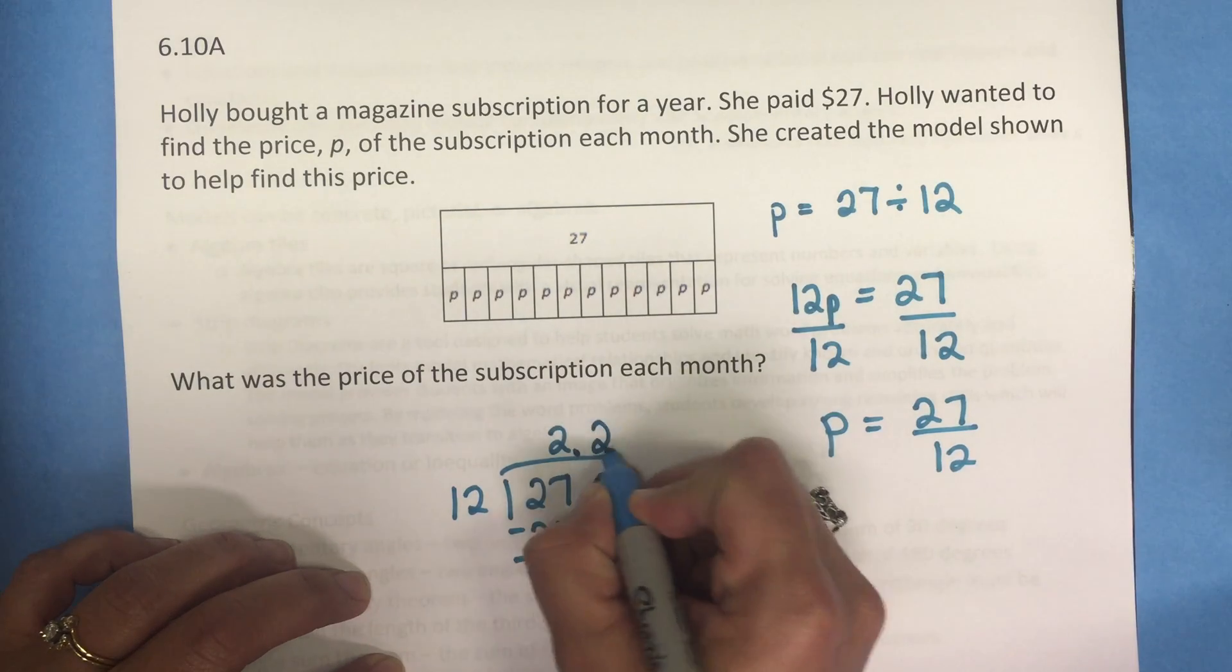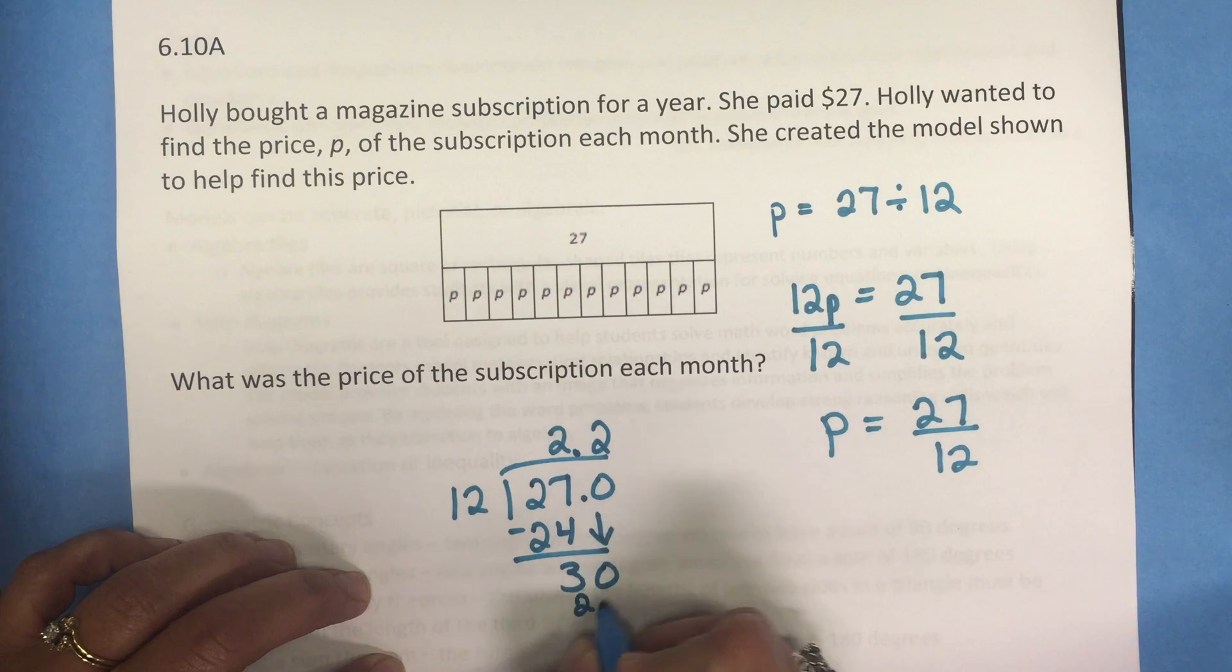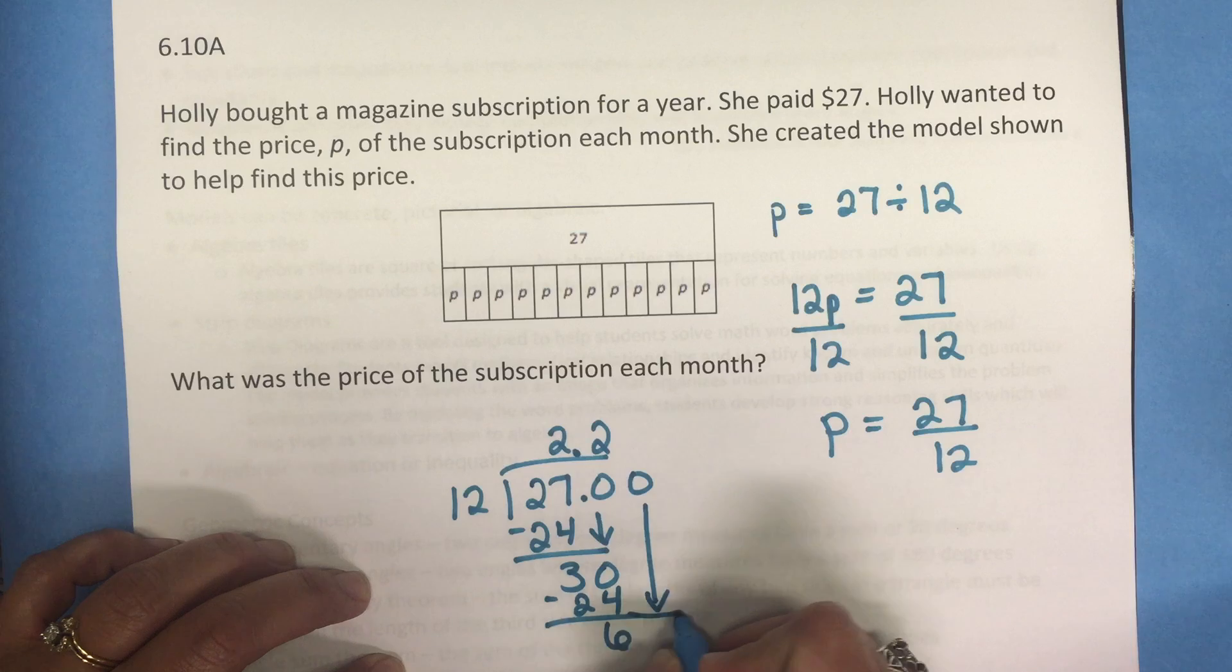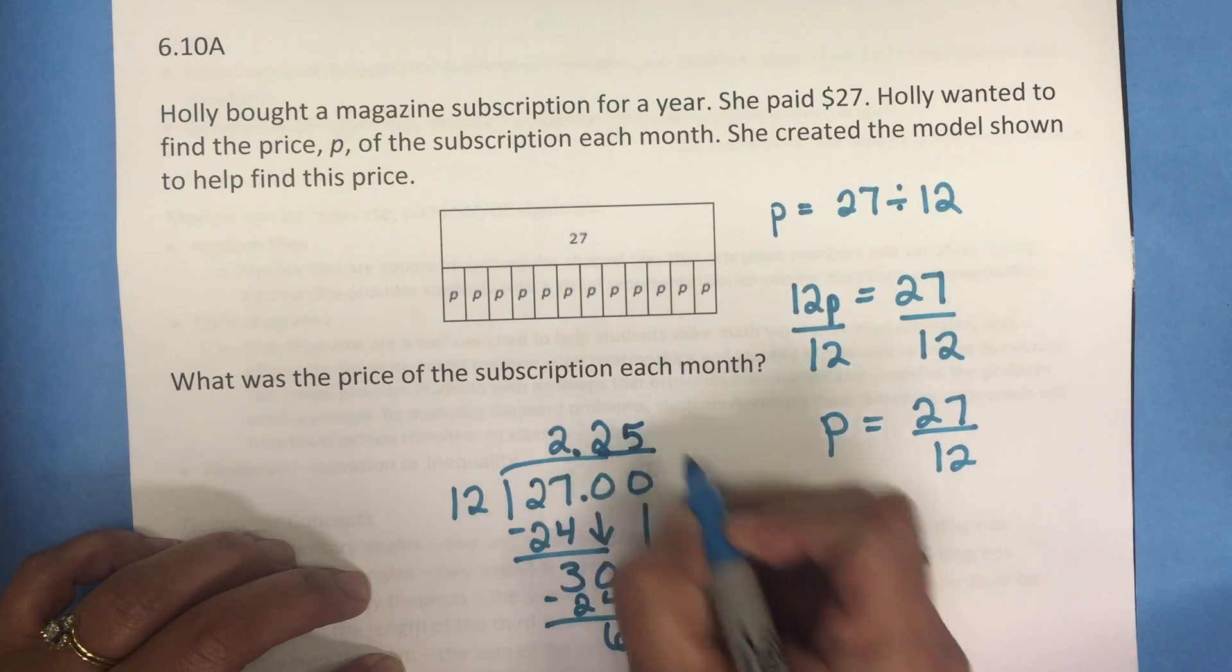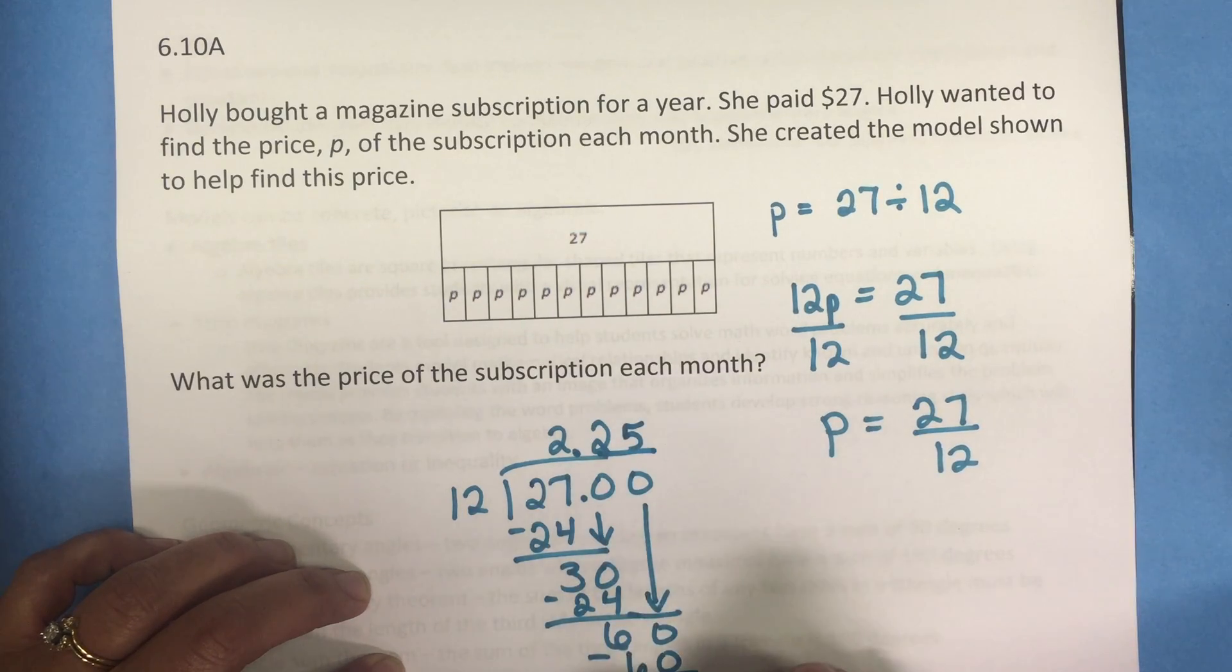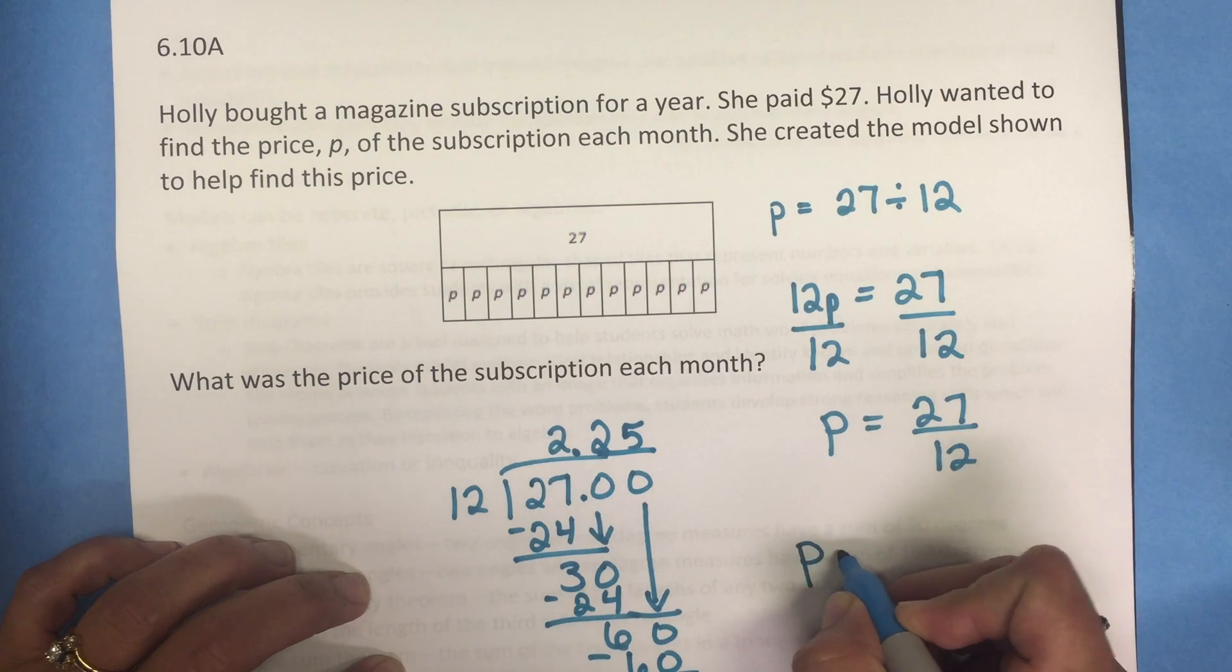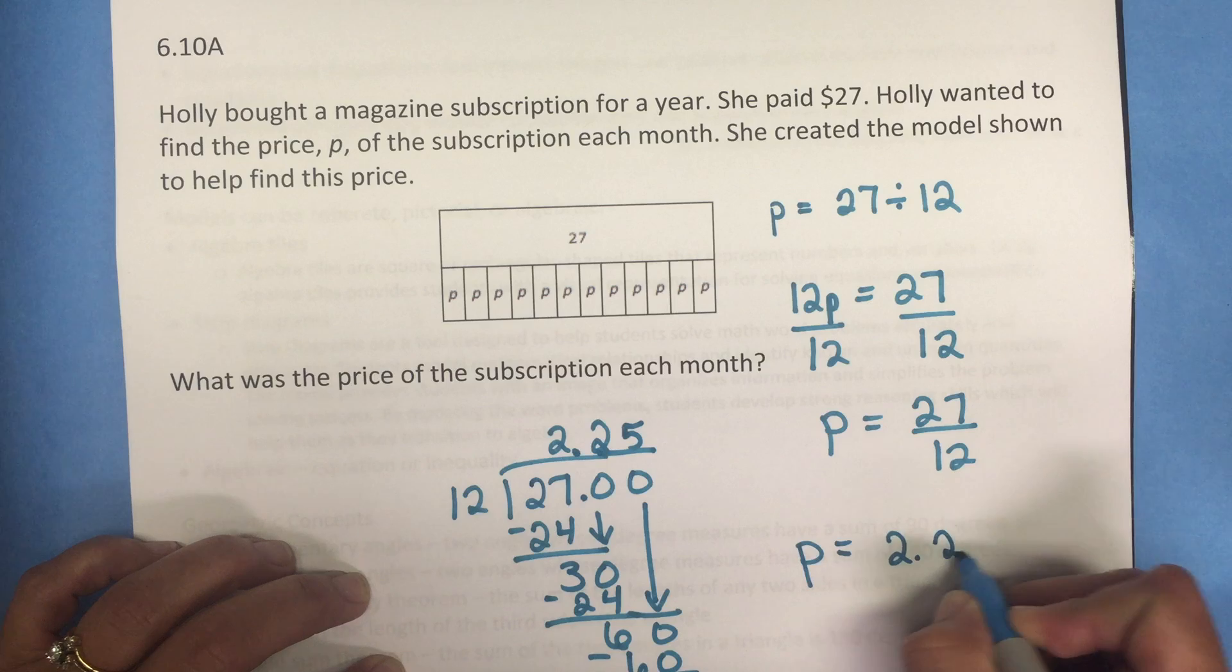To determine how many times 12 will divide into 27, using the standard algorithm we get that P equals 2.25.